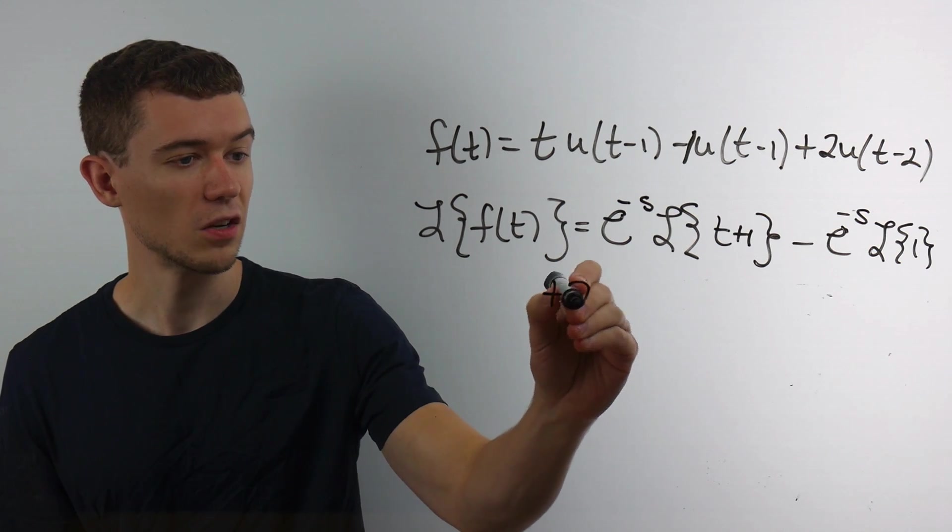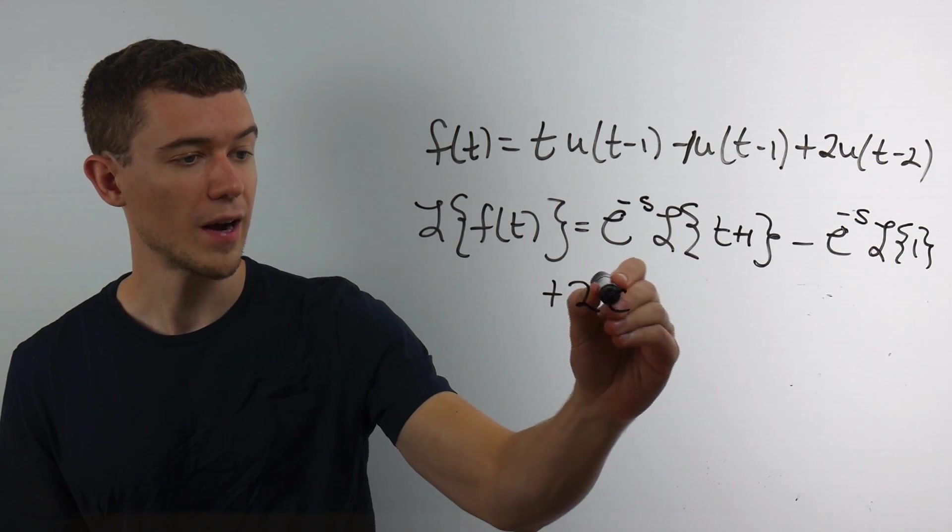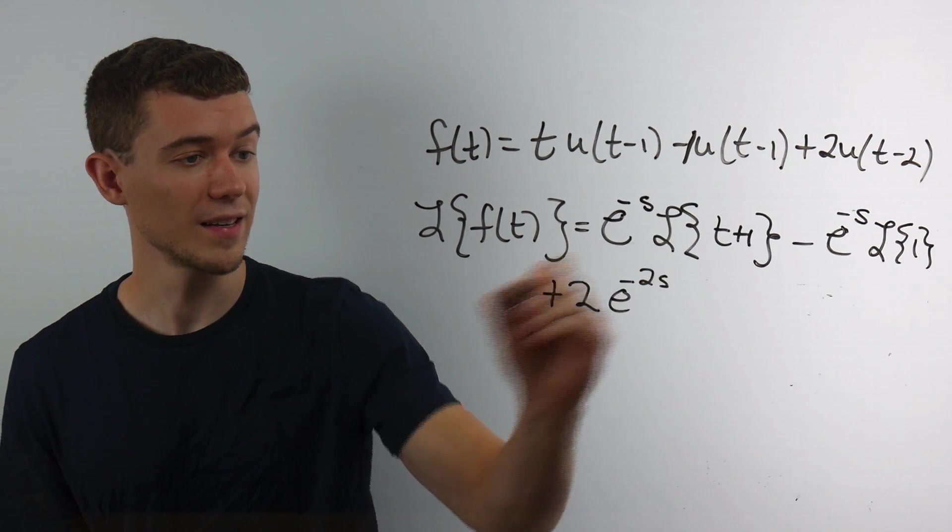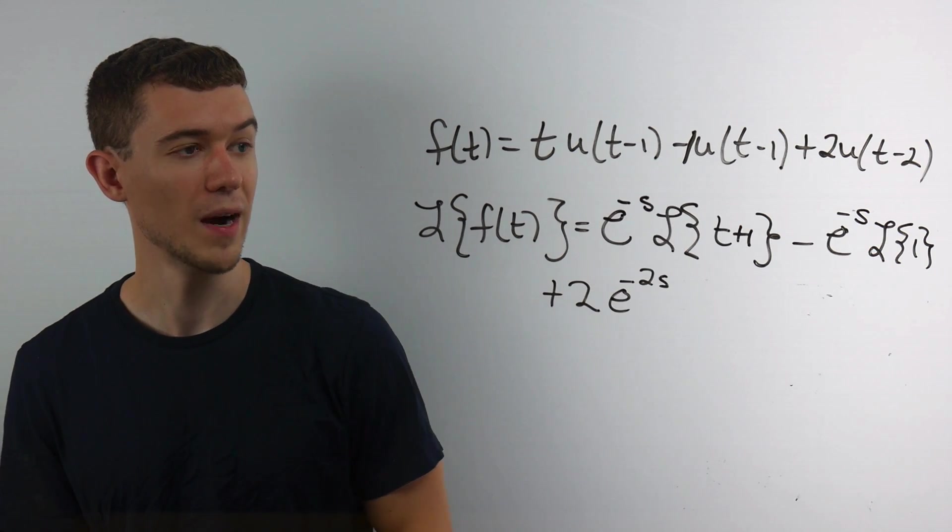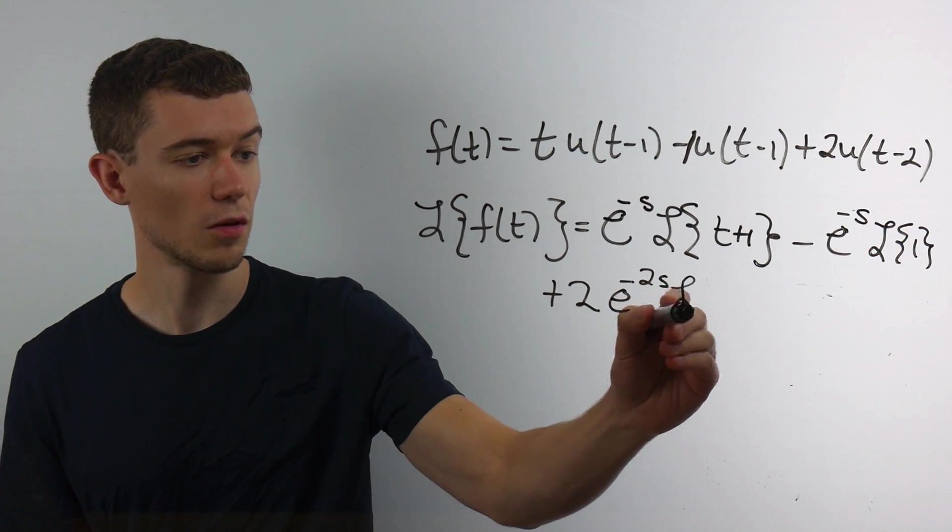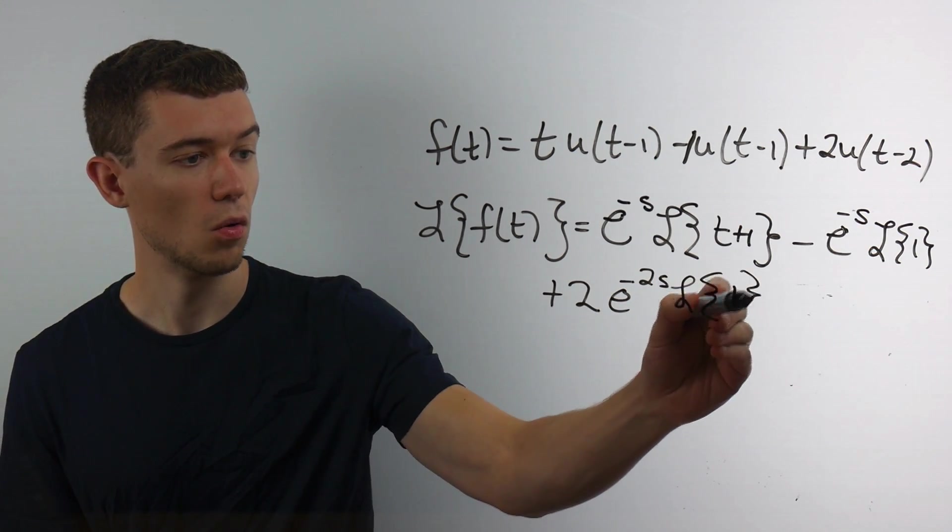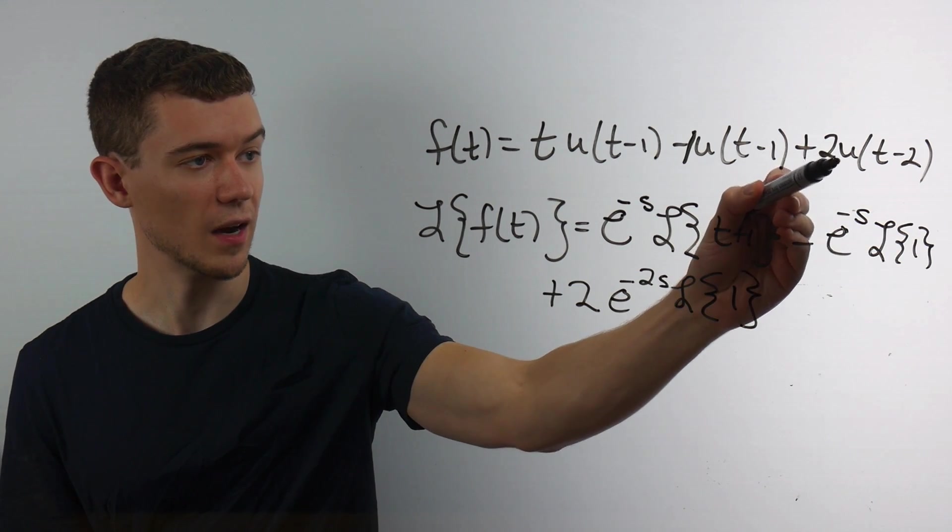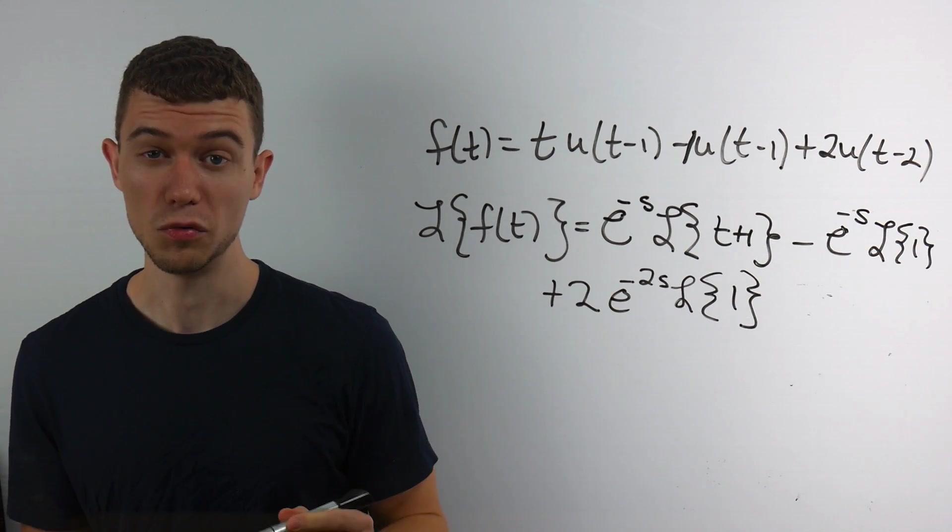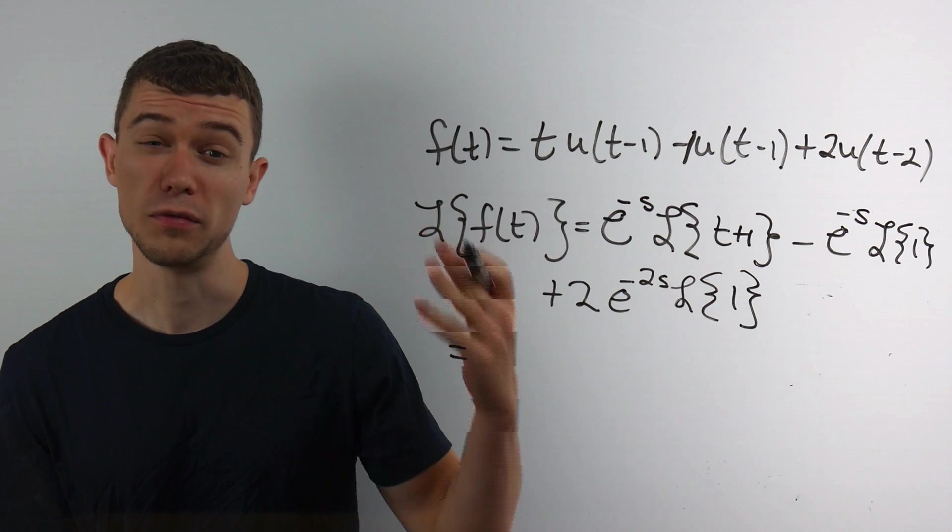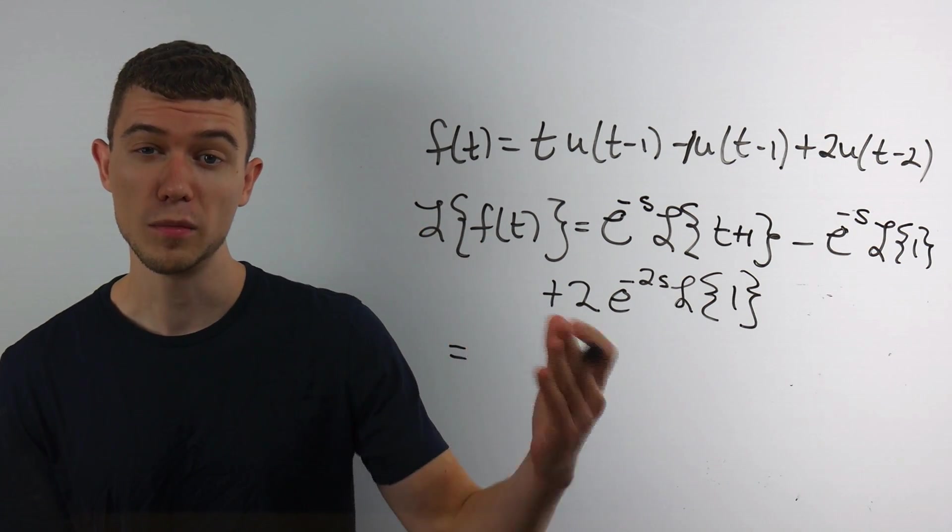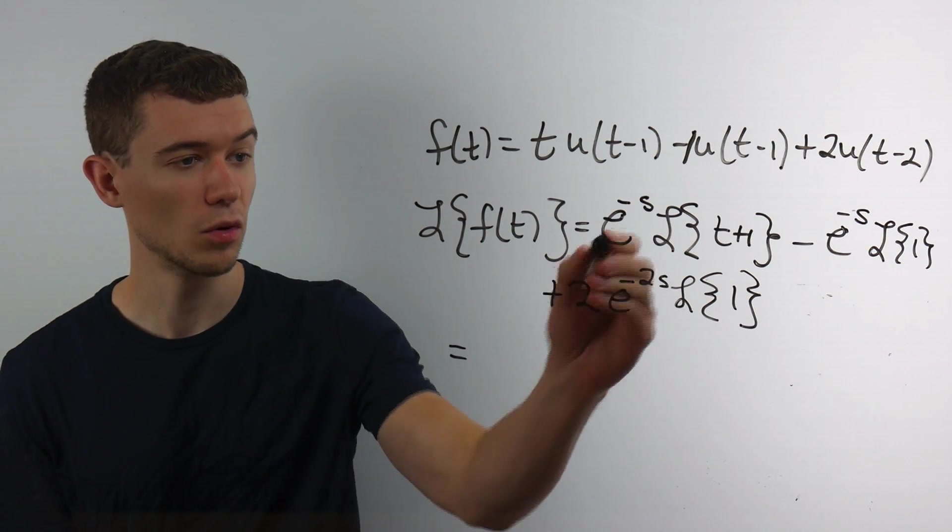I'll then have plus 2. Here, we would have e to the minus 2s, the 2 coming from this minus 2, times the Laplace transform of 1. Again, there's an invisible times 1 in front of the u function. Now, these remaining Laplace transforms are fairly straightforward. You would find them on a table of Laplace transforms.